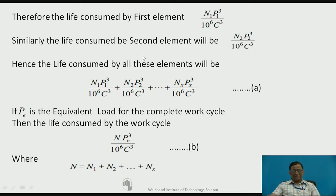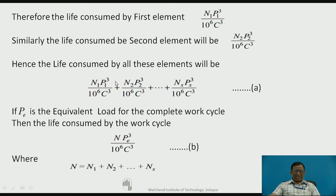Similarly, for the second element it will be N2·P2³ / (10⁶ · C³). Covering all x elements and summing gives the total life consumed in that work cycle. Now, if I consider the single equivalent load PE, it is going to complete N total cycles, giving the relationship N·PE³ / (10⁶ · C³).